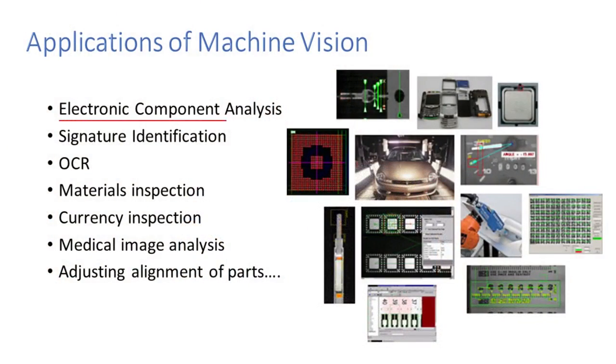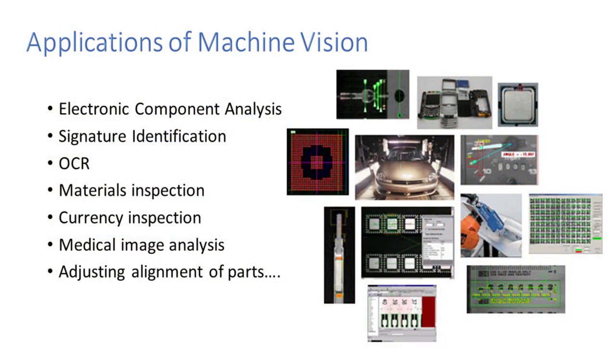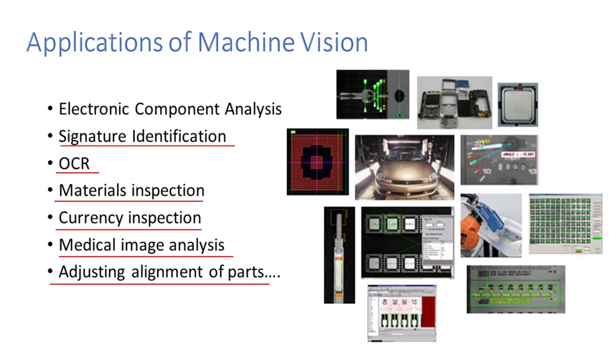Where is machine vision applied? It's very wide — almost everywhere. To list a few: electronic component analysis, such as quality inspection of motherboards; digital signature identification; optical character recognition; material inspection; currency inspection; medical image analysis; and adjusting the alignment of parts.